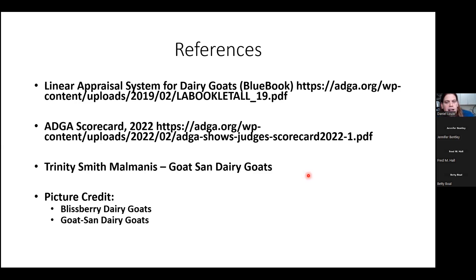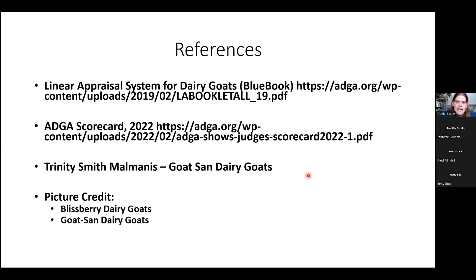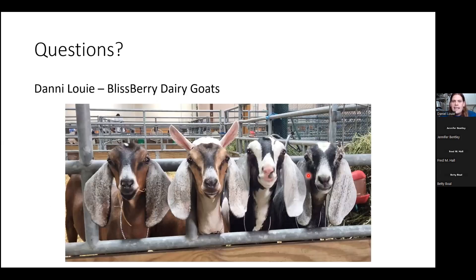These are the references for that talk. A lot came from the linear appraisal system — the glue book — for the American Dairy Goat Association, and is heavily related to the ADGA scorecard. I have to give a shout out to Trinity Smith Malmanis of Goats and Dairy Goats in California — a lot of this was taken from her talk, as she was supposed to present at the Iowa event but had a conflict and asked me to step in. Photo credits go to her as well. Do we have any questions?